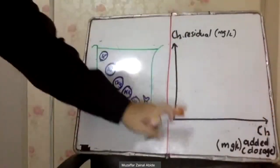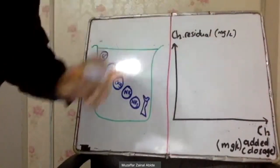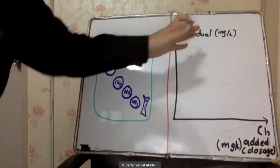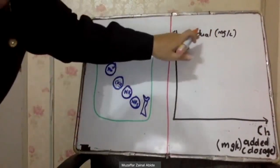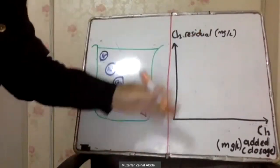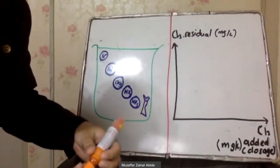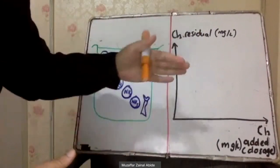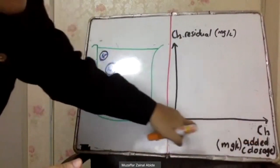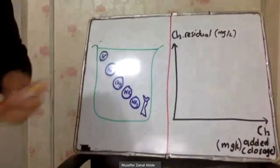Here is a graph I would like to show you. The y-axis is the chlorine residual in milligrams per liter — that is how much chlorine is left in the water that can disinfect it. Residual chlorine is the chlorine present in water that can kill bacteria or microorganisms. The x-axis is the amount of chlorine added to the water.